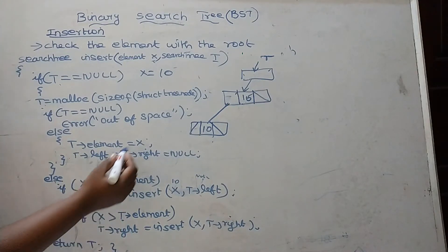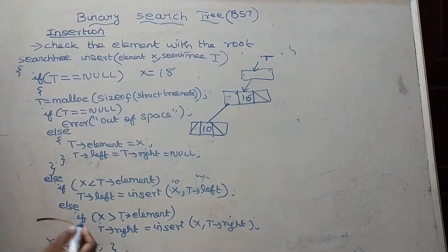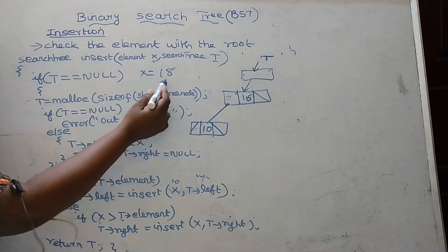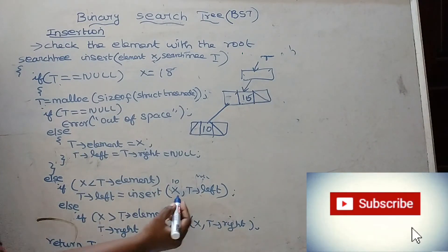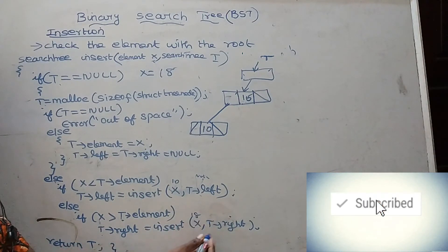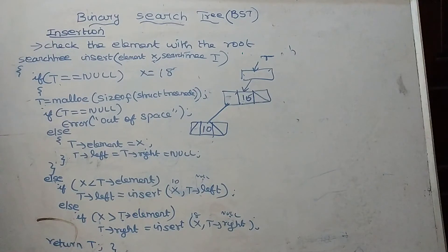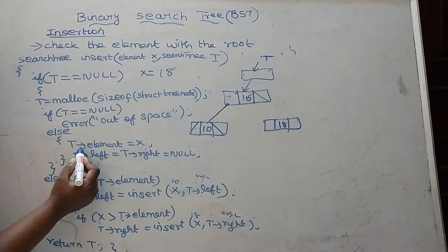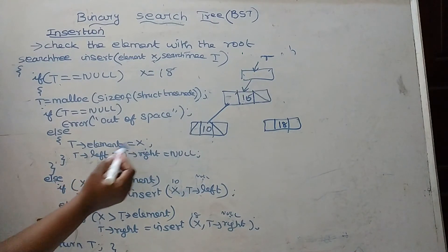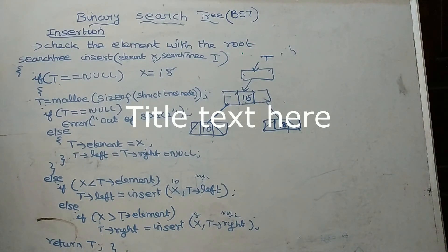Now we insert 18 — X equals 18. This is the third case. We check 18 against the root node: else if X greater than T of element. The condition is true because 18 is greater than 15. So we traverse the right subtree. T of right is null, so we allocate a new space for the node, store 18 in T of element, and set T of left and T of right to null. That is how the insertion procedure works in a binary search tree.